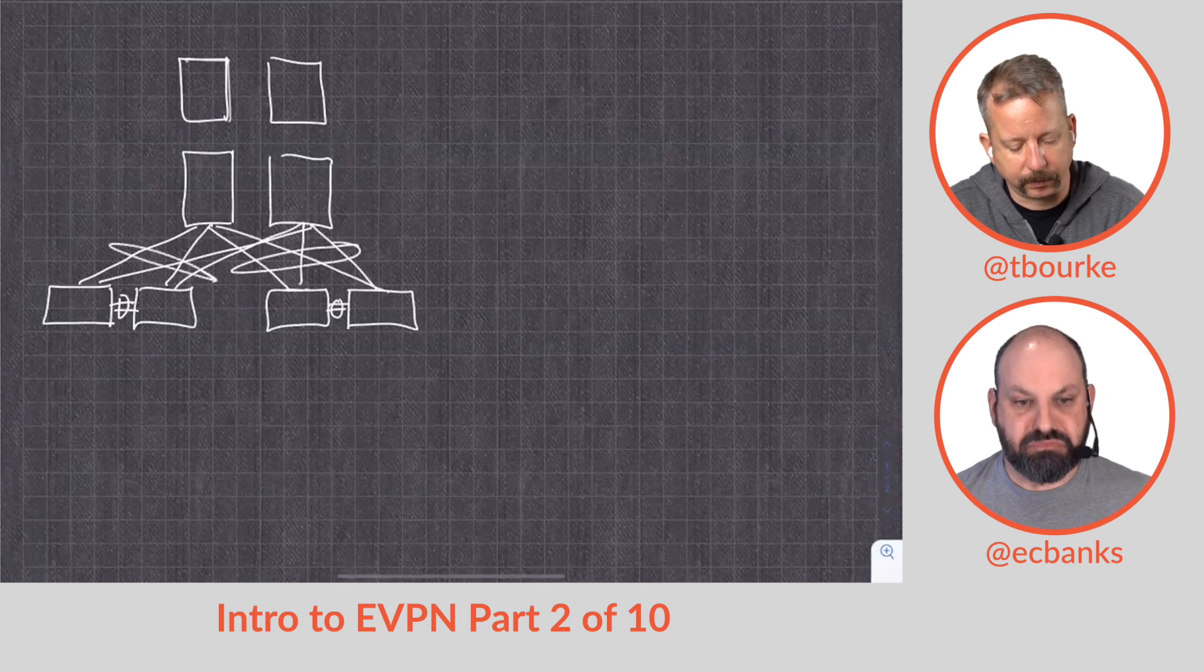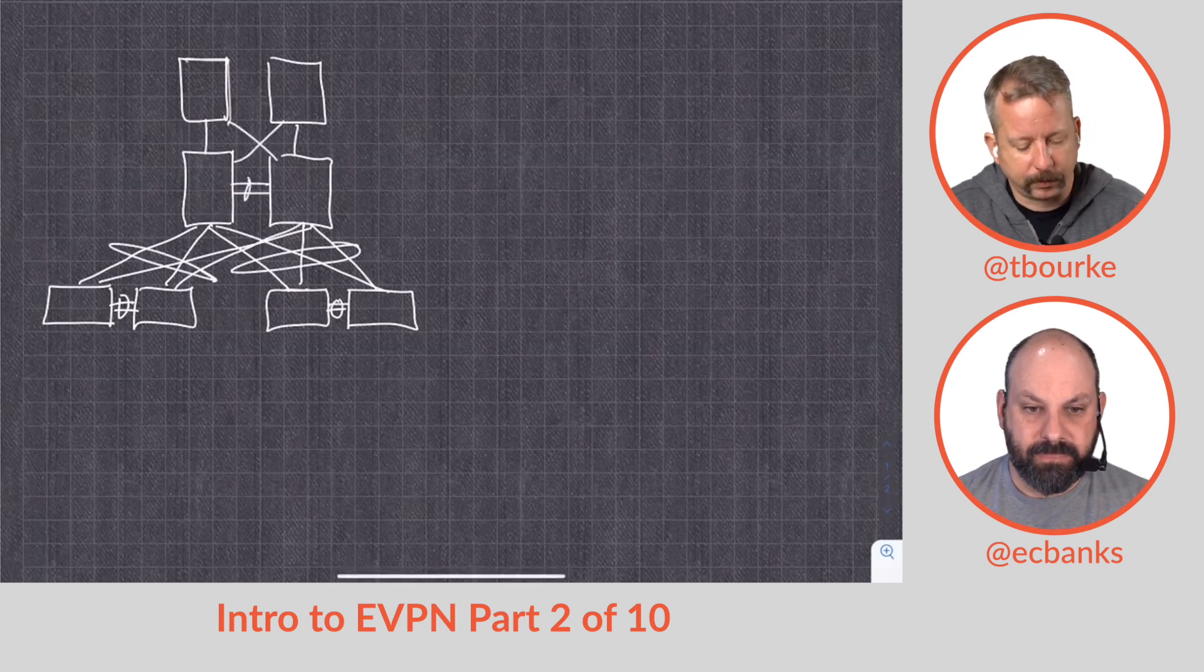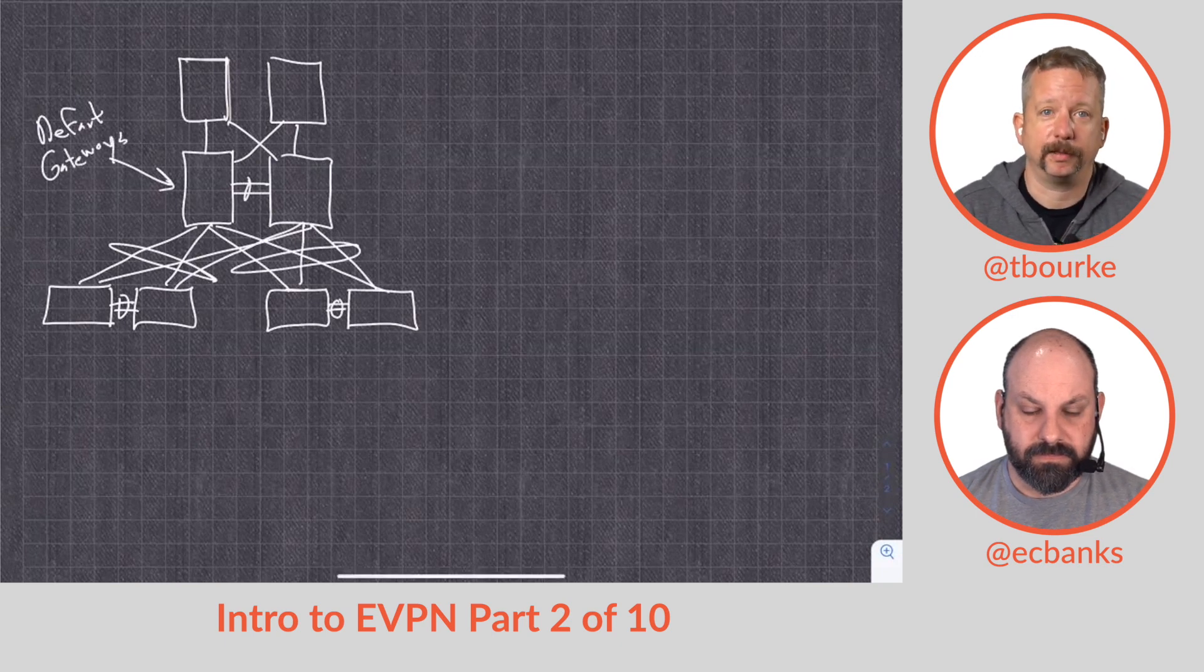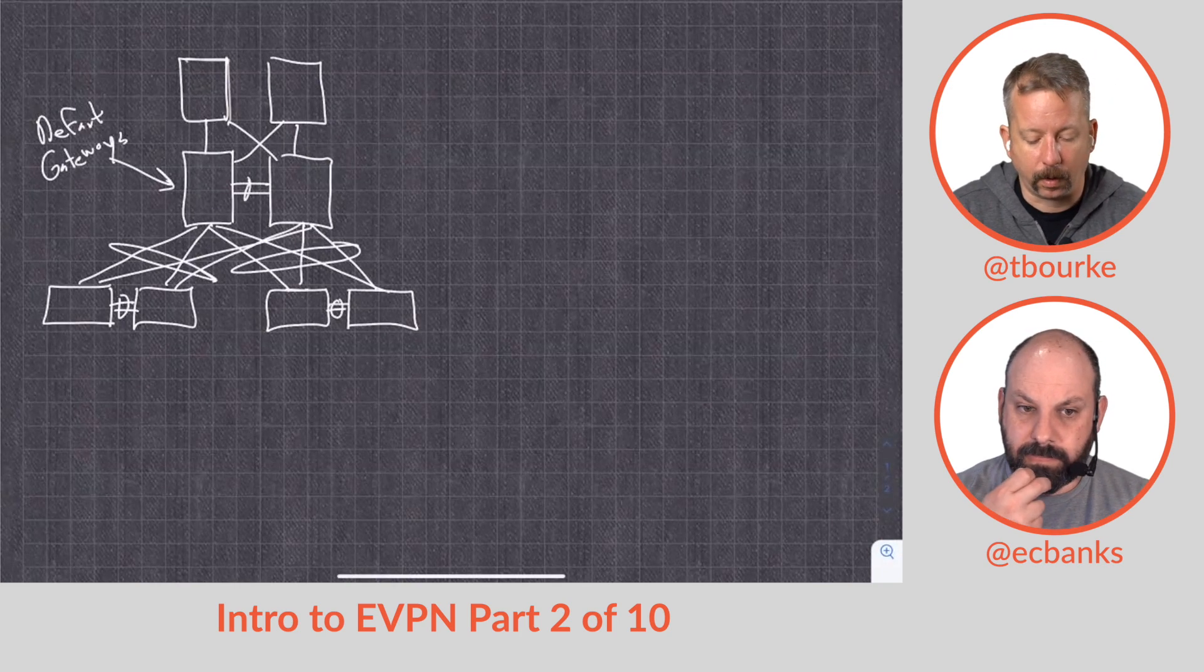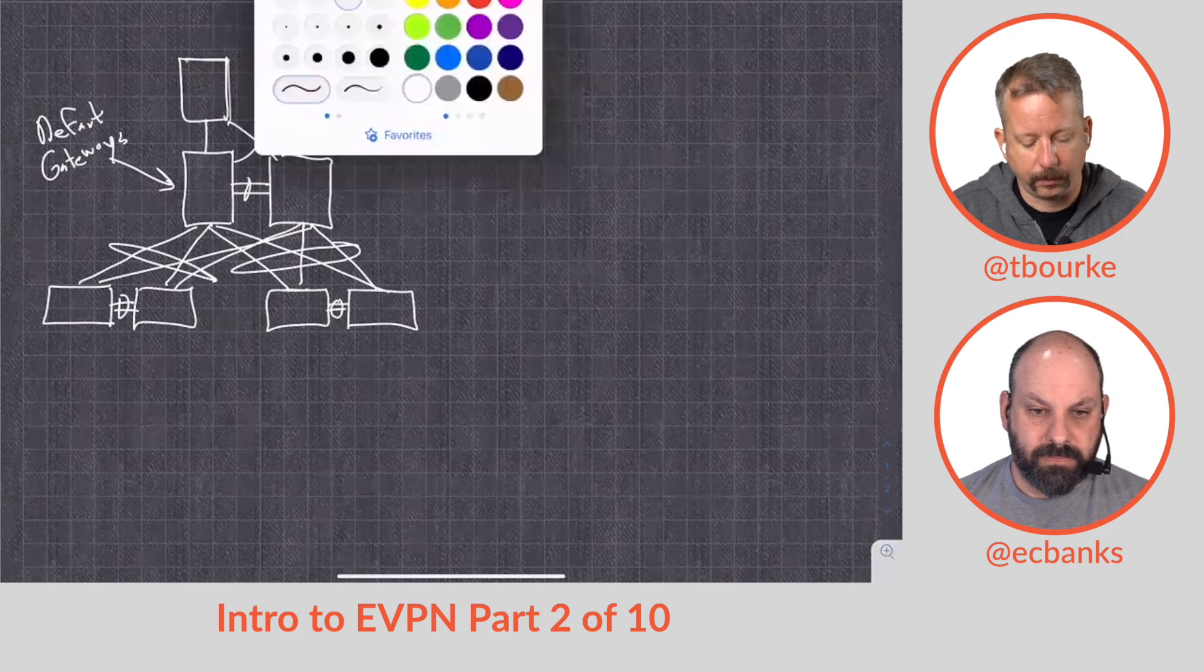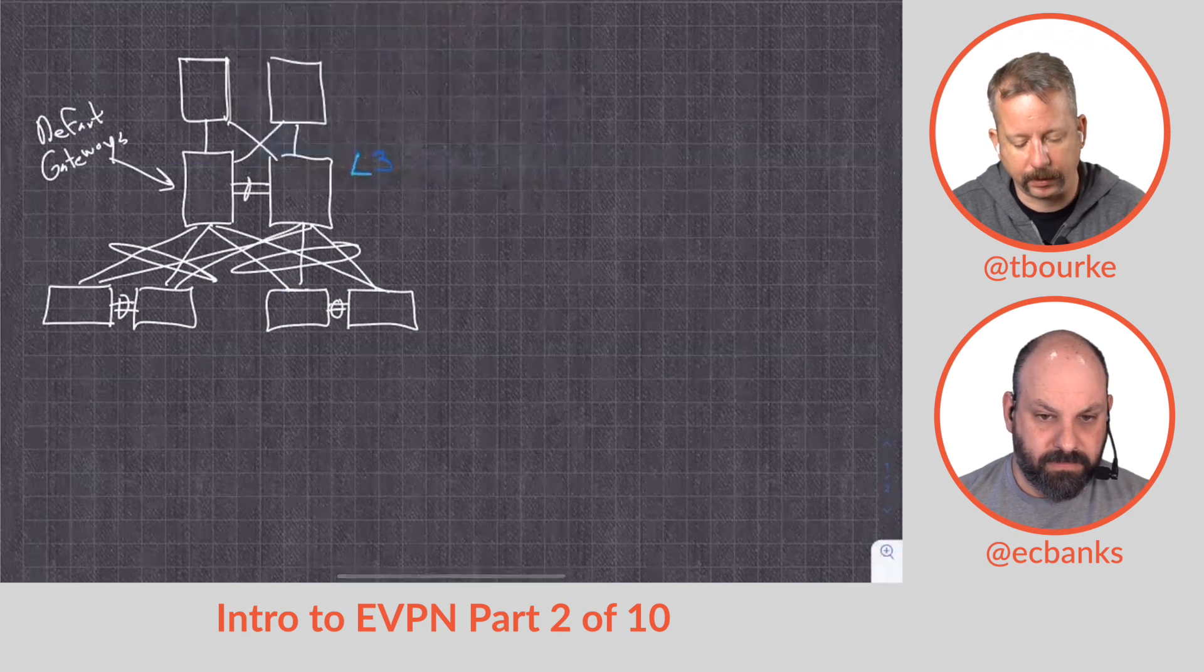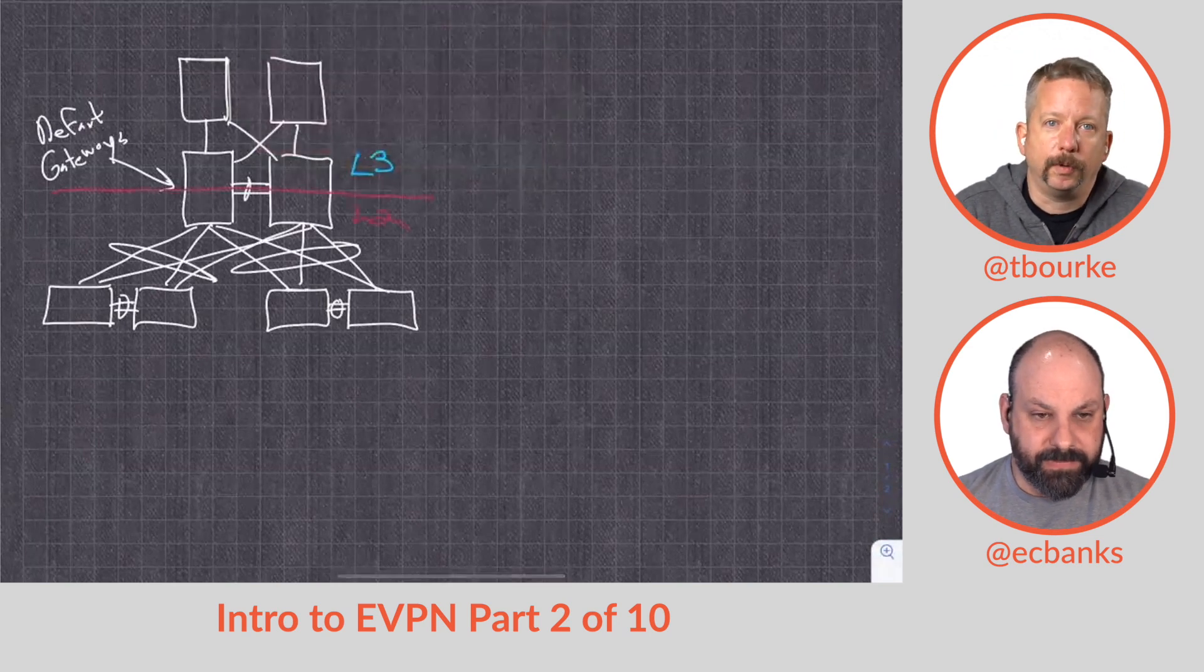This has been the data center since about 2006 or so. Our default gateways are going to be here, so we're going to run some sort of first hop redundancy protocol like VRRP or HSRP. One will be active, the other will be standby. If we have multiple VLANs we can, as SVIs, stagger active and standby across them. But the important thing is that our layer 3 boundary is up here, and then everything below this is purely layer 2.